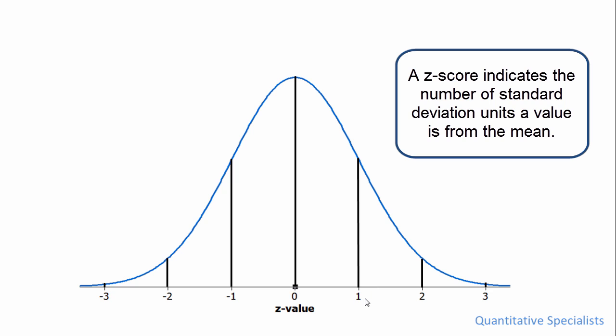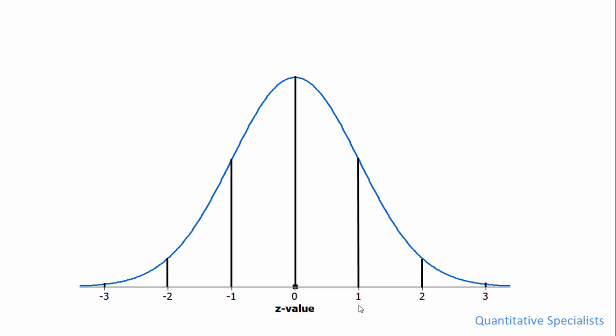So for example, this z of one here, if there was a value right here at a z of one, it means that value is one standard deviation above the mean. For a z of two, it's two standard deviations above the mean.